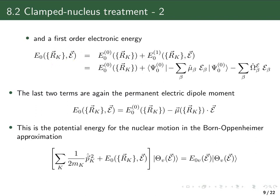We can also expand the electronic energy in the presence of the field in perturbation theory. We have the unperturbed energy at this geometry and include the first-order correction, which is the expectation value of the first-order Hamiltonian with the unperturbed wave function. The first-order Hamiltonian has an electronic part and a nuclear part; since we deal with electronic wave functions, the nuclear part comes out of the integral. Together these give the permanent electric dipole moment, so the energy to first order is the unperturbed energy minus the scalar product of the dipole moment and the external electric field.